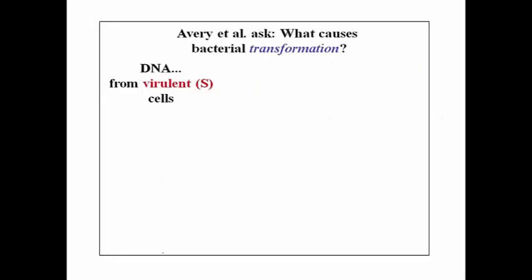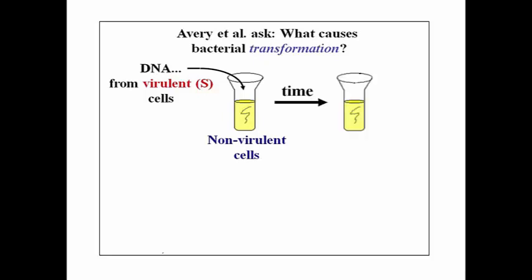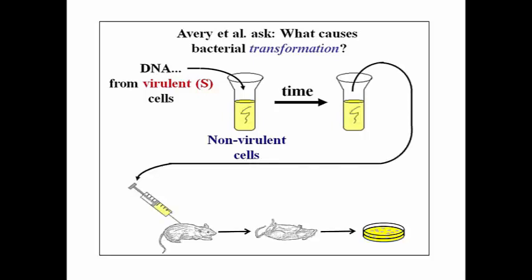Avery, MacLeod, and McCarty actually identified what came to be called the transforming principle, that molecule which causes the genetic transformation. So what they did was they purified DNA from virulent cells, mixed them in a tube with non-virulent R cells, waited for a time, and then took the resulting cells and injected them into a mouse, and lo and behold, the mouse died.